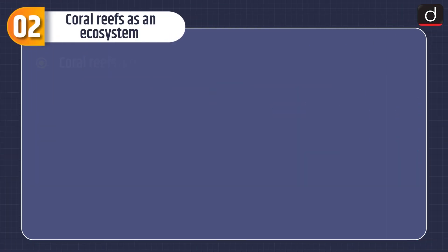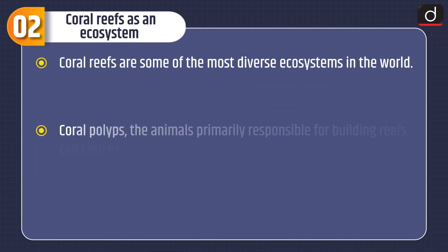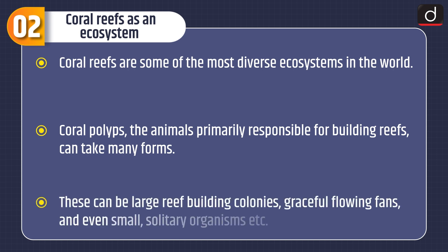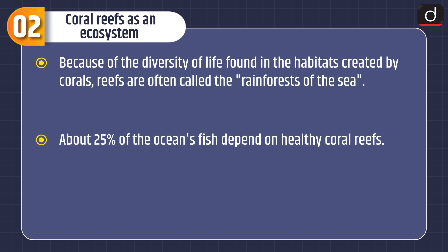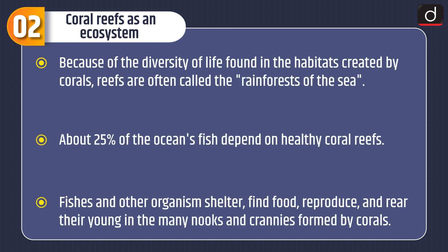Now let's understand coral reefs as an ecosystem. Coral reefs are some of the most diverse ecosystems in the world. Coral polyps, the animals primarily responsible for building reefs, can take many forms — large reef-building colonies, graceful flowing fans, and even small solitary organisms. Because of the diversity of life found in the habitats created by corals, reefs are often called the rainforests of the sea. About 25% of the ocean's fish depend on healthy coral reefs.